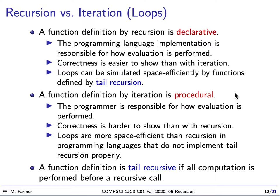If we're using loops, loops are going to be more space efficient. Most programming languages have recursion, but they may not implement tail recursion properly, which means loops are actually the better alternative. In a language where tail recursion is implemented correctly, it doesn't matter if you use loops or tail recursion — both are equally space efficient.